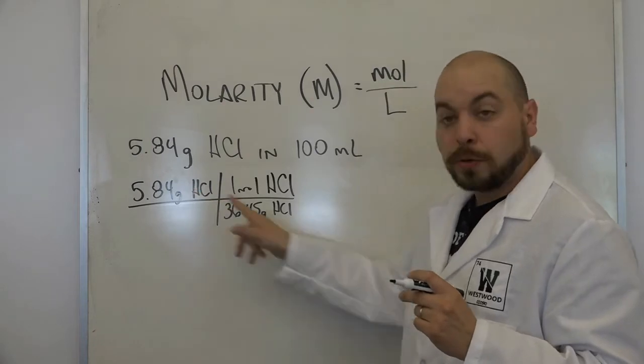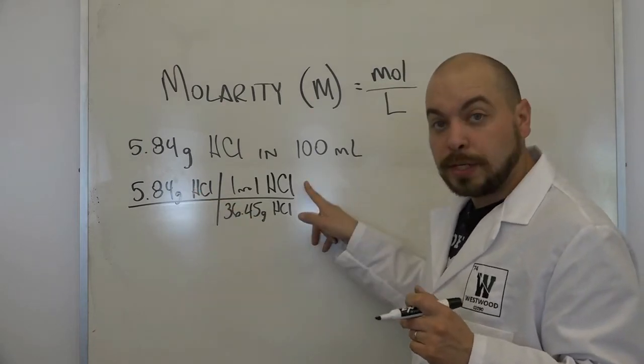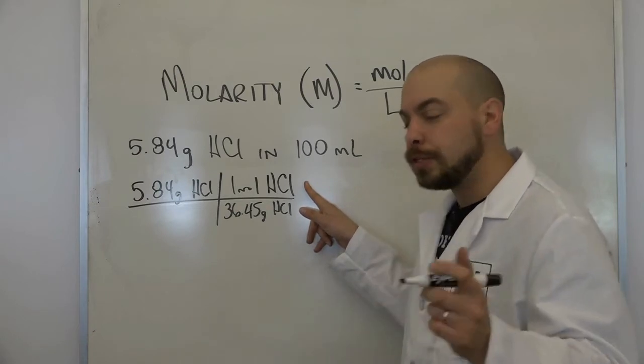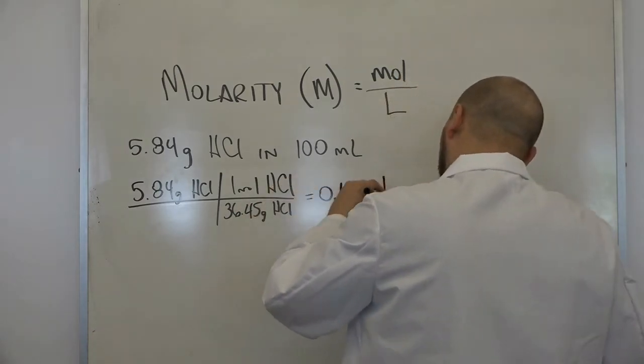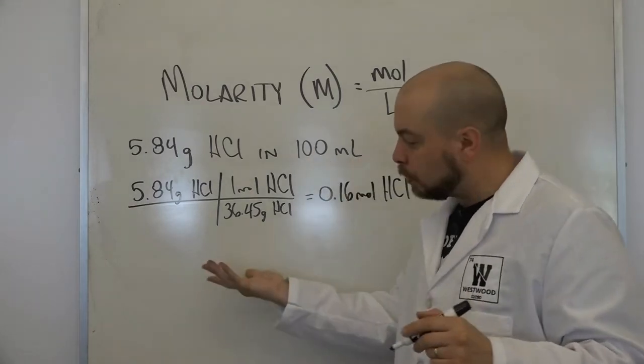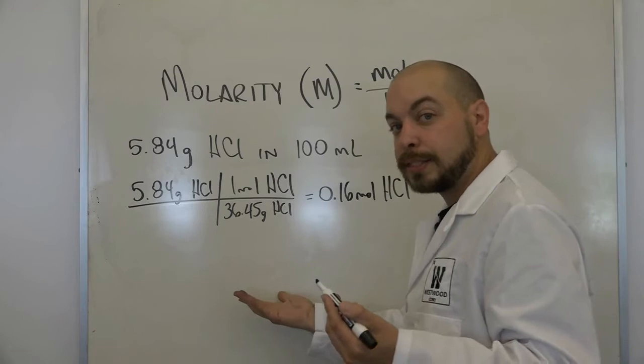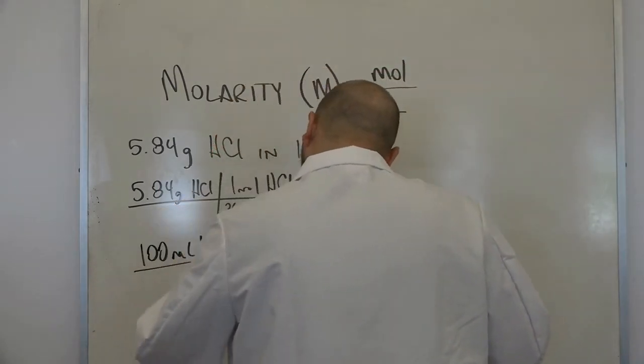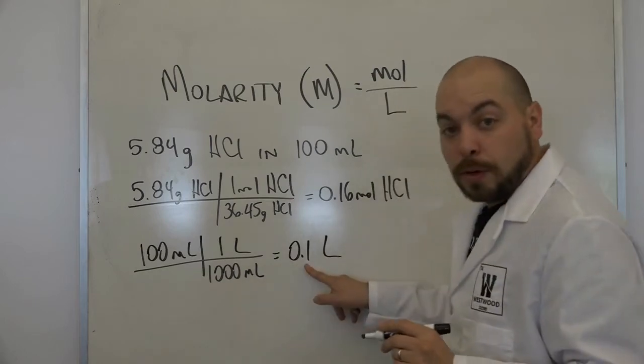Now, we're going to cancel our grams of HCl. We're in moles of HCl, and we end up with a unit of 0.16 moles of HCl. We need to then go from 100 milliliters to liters. You can do this in your head, but we can also do this just as a quick dimensional analysis setup. We end up with 0.1 liter.